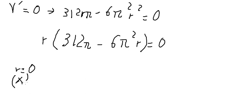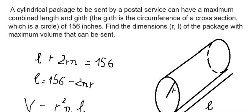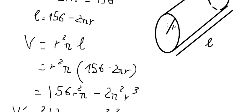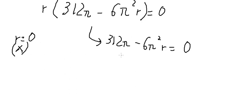So r equal to zero, this one cannot get anything here because if r equal to zero, this one they go in here you get 156, so this one cannot be the circle anymore. So we just have this one left. We put this one to the right and later we divide both by negative 6π. So we will have negative 312π divided by negative 6π². We simplify this one and we got 52 over π.